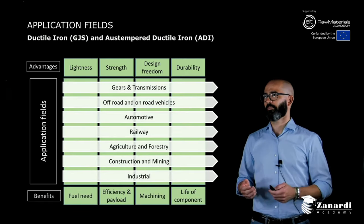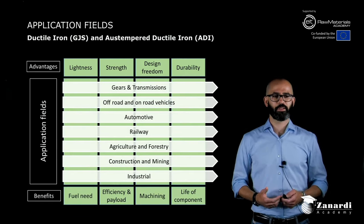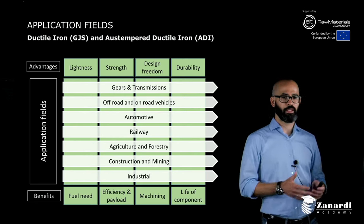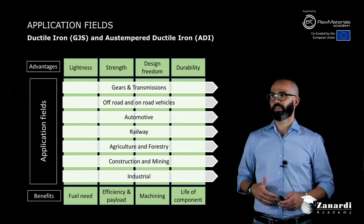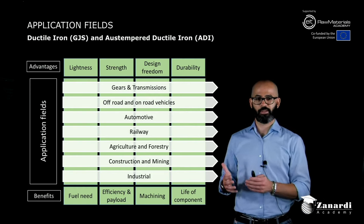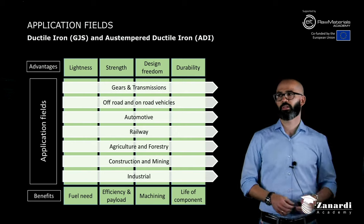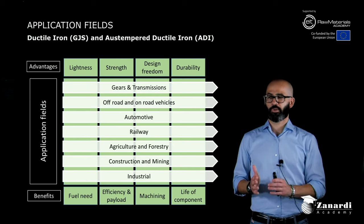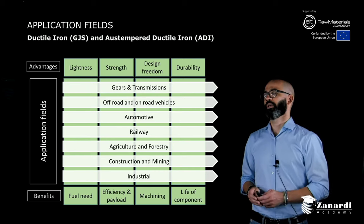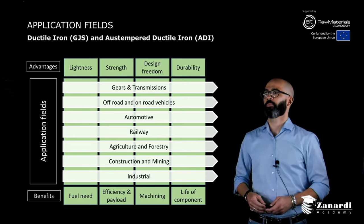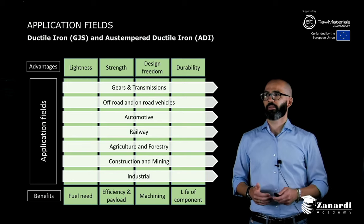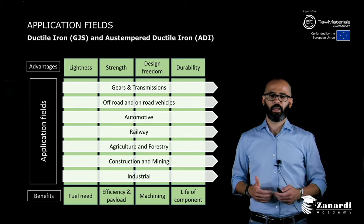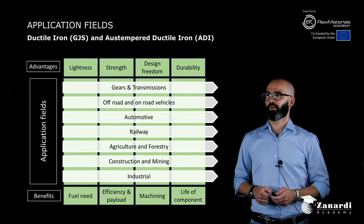Thanks to these properties, you gain real benefits for the final application. You can reduce fuel consumption because the vehicle can be lighter, or you can increase efficiency or payload thanks to superior mechanical strength compared to previous technologies. Design freedom lets you save material and reduce machining, reducing cost and waste. And finally, durability — wear resistance means a longer life for your component, reducing the number of replacements during the machine's lifetime.